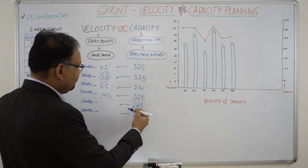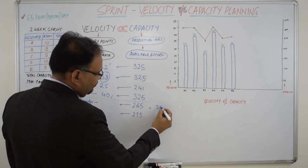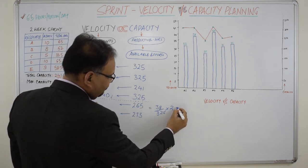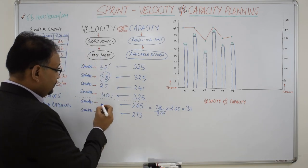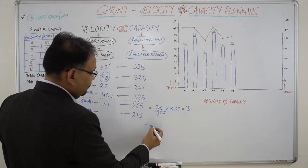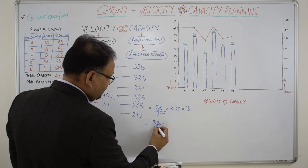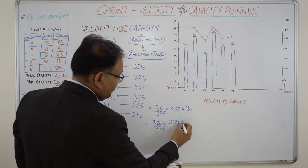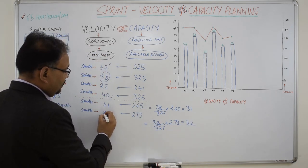When the capacity is 265, the velocity will be 38 divided by 325 multiplied by 265, that comes out to be 31. So 31 is the projected velocity for sprint 5. For sprint 6, 38 divided by 325 multiplied by 273, this comes out to be 32. So 32 is the projected velocity of the sprint 6.